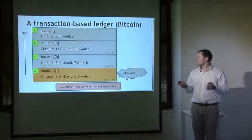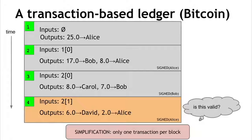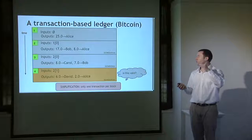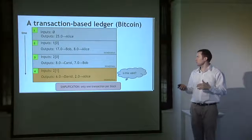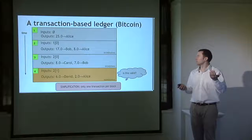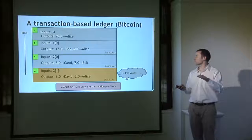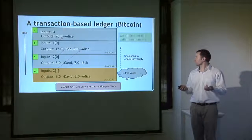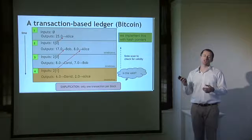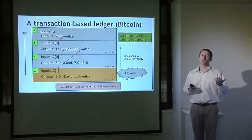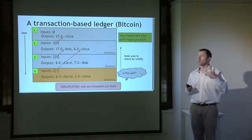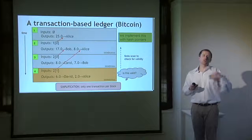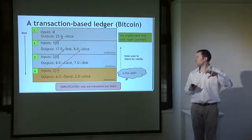Now it's much easier to validate a new transaction because we know exactly which input to look at — just go to transaction two, output one, and verify there's enough money there and it hasn't been spent already. It's a finite backward scan implemented with hash pointers. Each transaction has a unique ID, which in reality is the hash of the transaction. We can also merge value — if two transactions sent 17 and 2 coins to Bob, he can create a new transaction with two inputs and one output combining all 19 coins. Similarly, joint payments are easy: a transaction with two inputs owned by two different people, requiring two separate signatures.